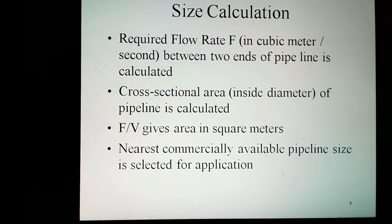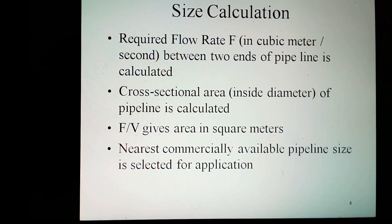For size calculation, the required flow rate in cubic meters per second between two ends of the pipeline is first calculated. The cross-sectional area within the pipe diameter is then calculated. Flow rate divided by velocity gives area in square meters. The nearest commercially available pipeline size is then selected for the application.